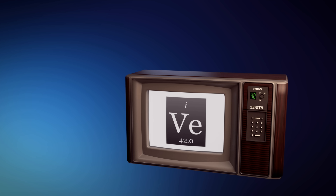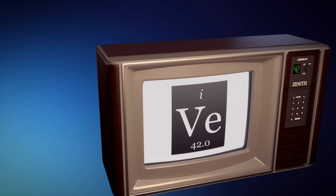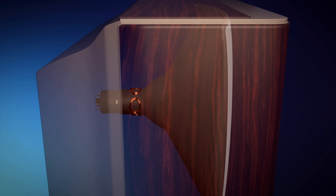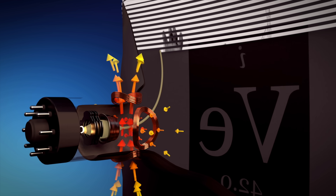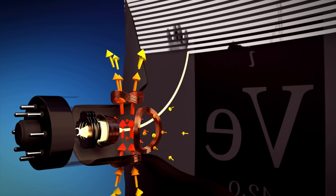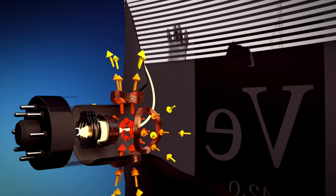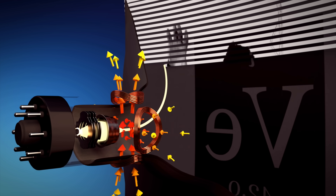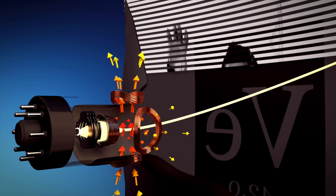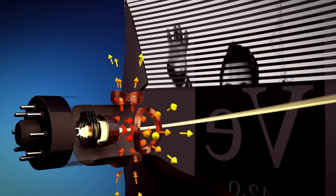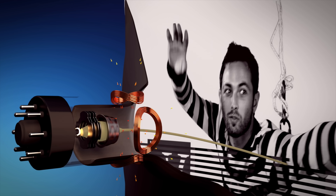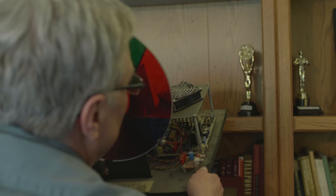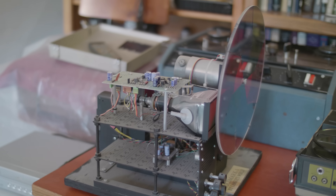Specifically, the cathode ray tube. This is a glass vacuum tube with an electron gun at the back. The electron gun fires a beam of electrons at the screen, which is coated in a phosphor — a chemical that produces light when hit by electrons. Using magnetic fields, this beam is scanned across the screen top to bottom, left to right. You vary the brightness of the beam by varying the voltage on a control electrode, determining how many electrons get sent out at any instant. Send out a lot of electrons and you get a bright spot; fewer and you get a dark spot. In that way, you can produce a nice black and white image.